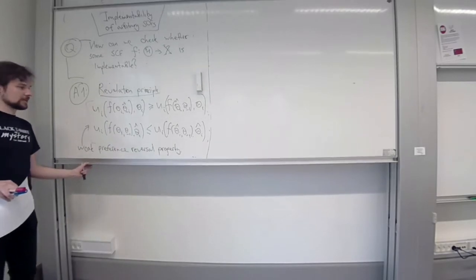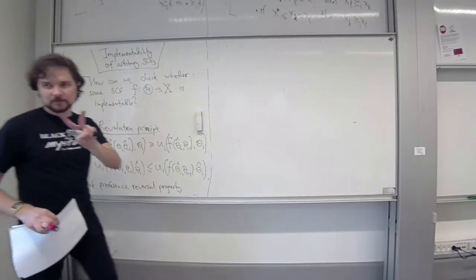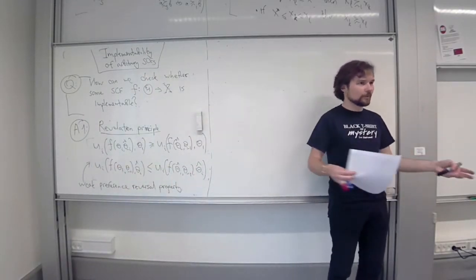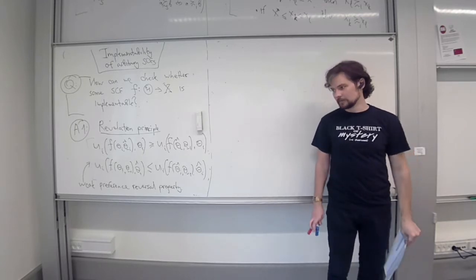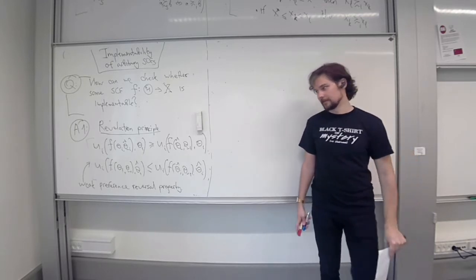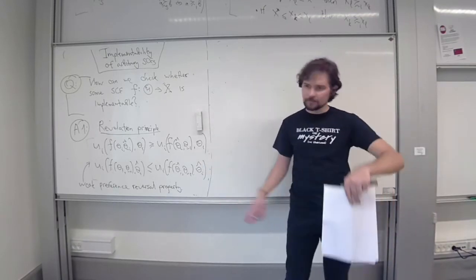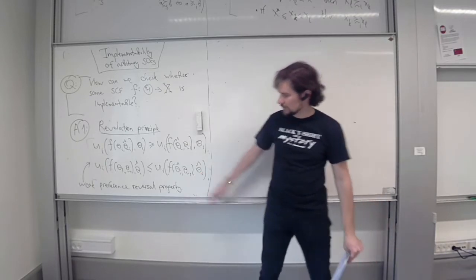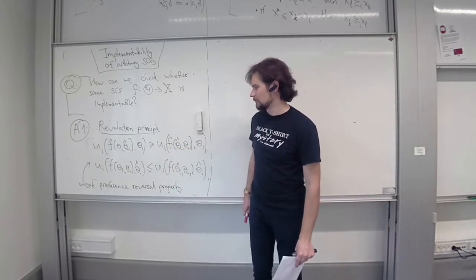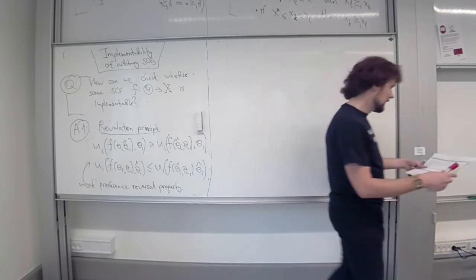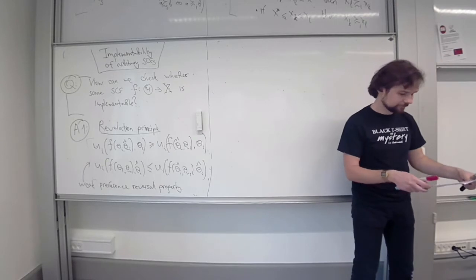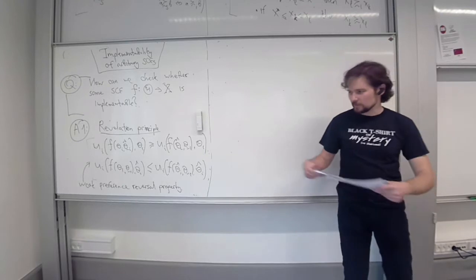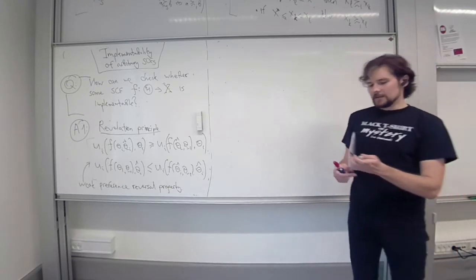This has its own name. I took it from old lecture notes - it's called the weak preference reversal property. To restate it: if you have two types choosing between two alternatives destined for both of them, then they should both prefer their own alternative. Once we change type of theta and theta hat, preference reverses weakly, because these are weak inequalities.